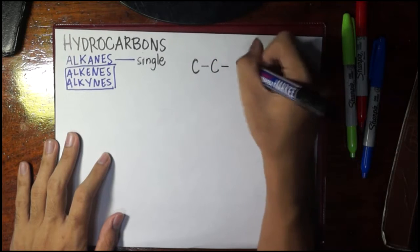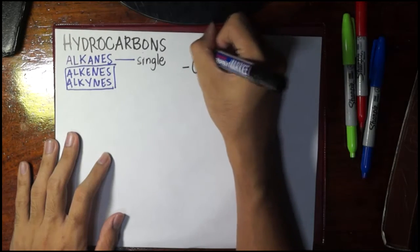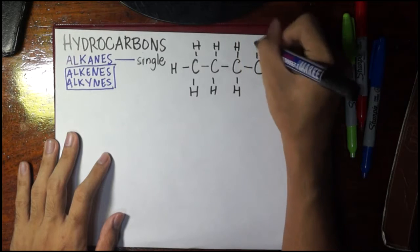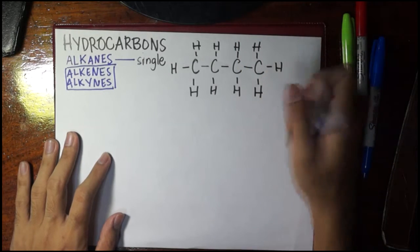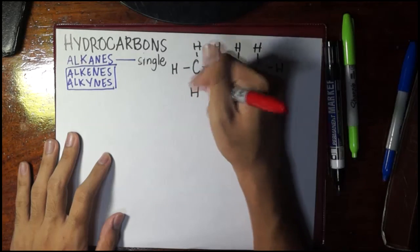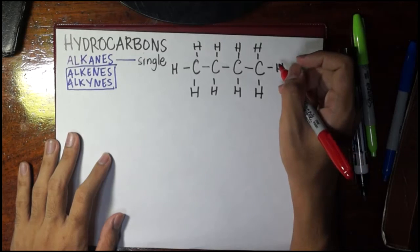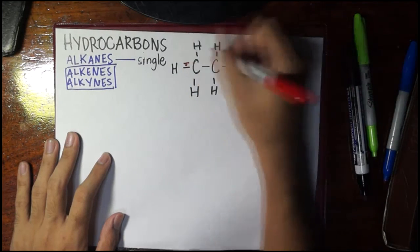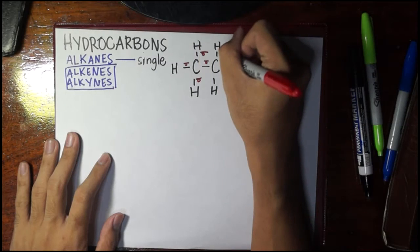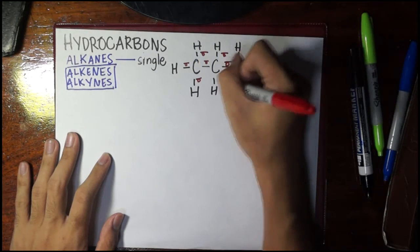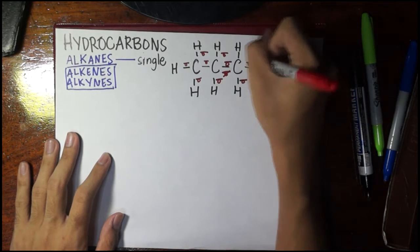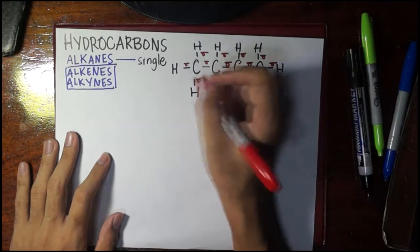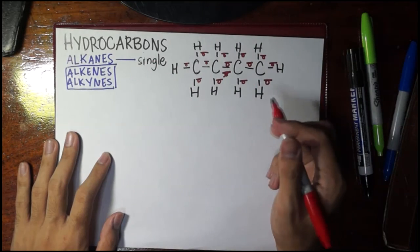Let's draw a sample — I'll draw four carbons, so this would resemble butane. Let's complete the hydrogens. Recall that all of these bonds are single bonds, and since they are all single bonds we can assume all of them to be sigma bonds. Recall that sigma bonds are strong bonds; it's not really easy to break a sigma bond.